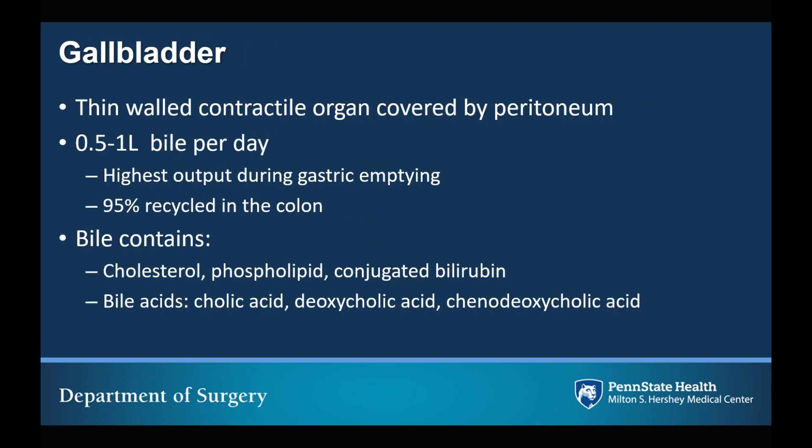In regards to the gallbladder, it is a thin-walled contractile organ covered by peritoneum. It produces half to one full liter of bile per day, with the highest output occurring during gastric emptying. Approximately 95% of bile output is recycled in the colon. Bile contains cholesterol, phospholipid, and conjugated bilirubin. Bile acids consist of cholic acid, deoxycholic acid, and chenodeoxycholic acid.